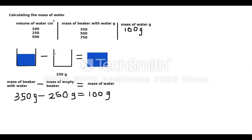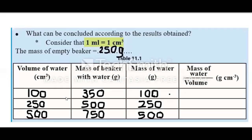We do these calculations for the other two volumes as well and fill up the table. Once the calculations are done, the results are: the mass of 100 cubic centimeters of water is 100 grams, the mass of 250 cubic centimeters of water is 250 grams, and the mass of 500 cubic centimeters of water is 500 grams.